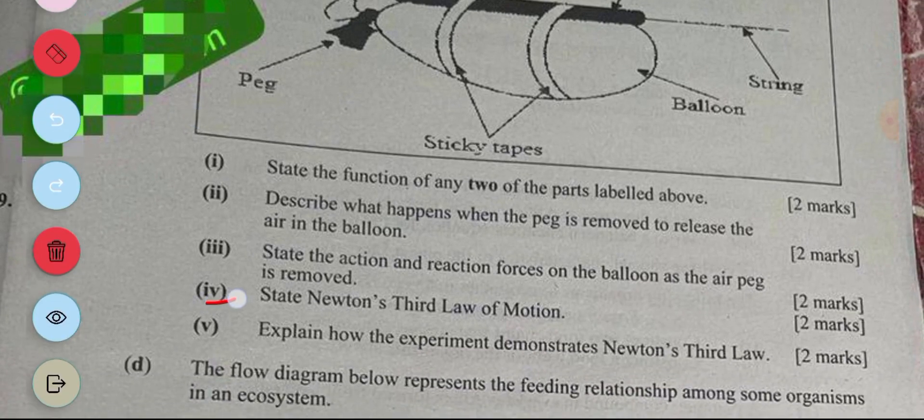The iv asks to state Newton's third law. Newton's third law states that to an action there's an equal and opposite reaction. Then the v asks, explain how the experiment demonstrates Newton's third law. So since the Newton's third law is about action and reaction, the action over here happens when the peg is removed. So the action is actually the air moving out of the balloon and the reaction is the balloon being propelled forward.